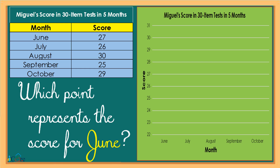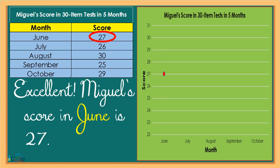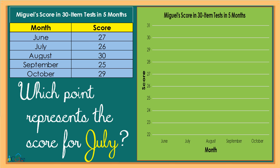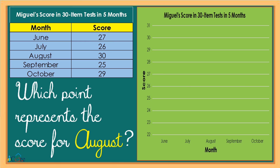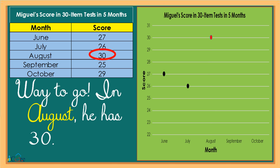Which point represents the score for June? Excellent! Miguel's score in June is 27. Which point represents the score for July? Very good! His score in July is 26. Which point represents the score for August? Way to go! In August, he has 30.